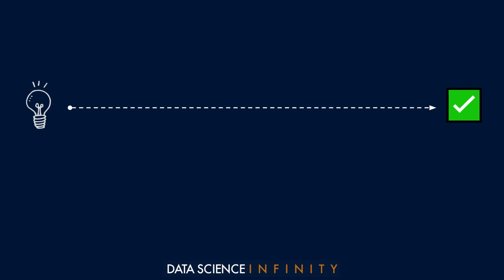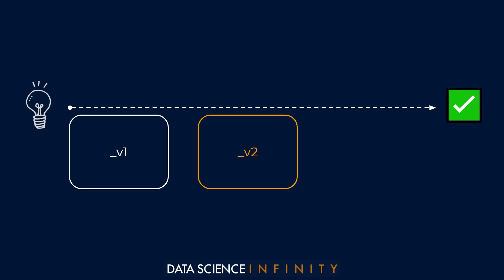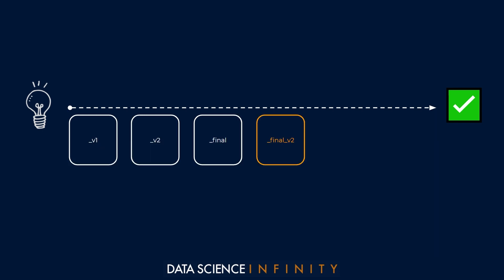For me generally this is something like ml_code_v1, ml_code_v2, and then ml_code_final, then ml_code_final_v2, ml_code_final_v2a, and eventually perhaps I end up with the disgrace that is ml_code_final_final. It makes me feel filthy just reading that, but we have all been there and I am certainly guilty of it too.